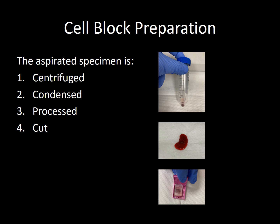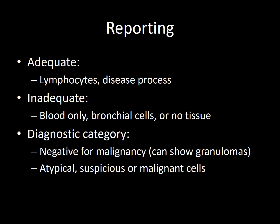Immunohistochemistry stain and molecular studies are performed preferably using the cell block, but can also be done from the smears if necessary. Slides review should indicate whether the specimen is adequate — meaning if there is adequate background of lymphocytes — or if the specimen is diagnostic of a disease process that explains the lymphadenopathy or the lesion being aspirated. A sample is labeled as diagnostic if it provides a definitive diagnosis such as malignancy. The final report should mention the adequacy of the sample, the diagnostic category, and the use of ancillary techniques, namely immunocytochemistry, flow cytometry, and molecular studies.